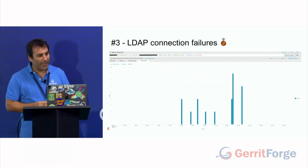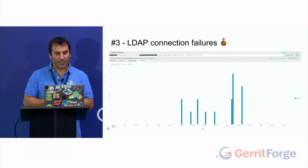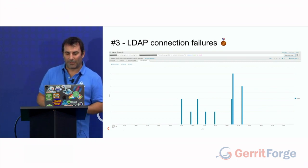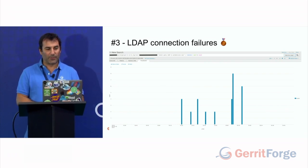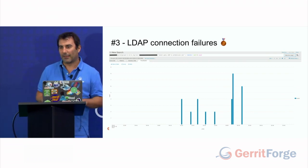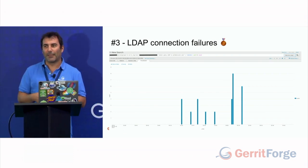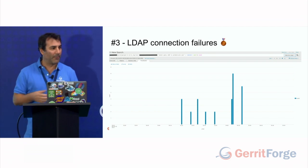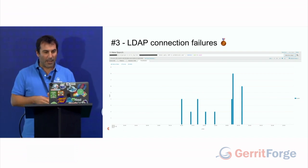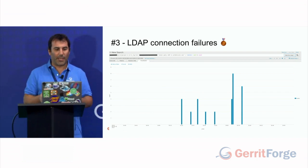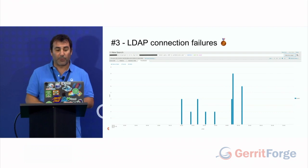Number three: LDAP connection failure. Gerrit is really sensitive to LDAP integration, so if you're using LDAP as authentication, you want to keep an eye on that. What usually happens is users start complaining and say Gerrit doesn't work, it's down — but in reality LDAP is down, and maybe LDAP is maintained by another team. You don't have a clear picture of it. You need to protect yourself and make sure you know straight away that you're having a connection problem with LDAP. That's something you can easily extract from your Gerrit logs.